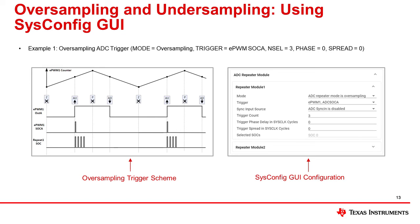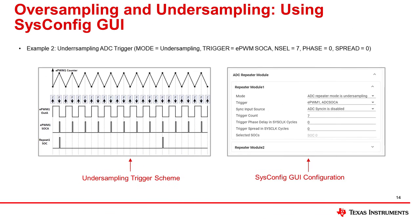When the configuration is saved and compiled, SysConfig automatically generates source code to configure the ADC in Board.c. Here is a second example demonstrating ADC undersampling using EPWMSOCA as the trigger source and N equal to 7, for an undersampling factor of 8.